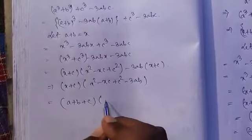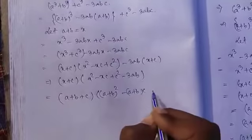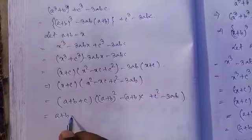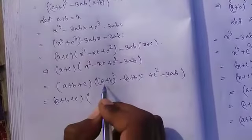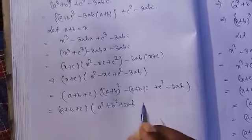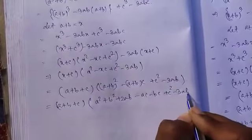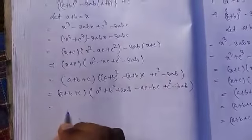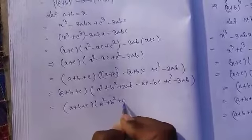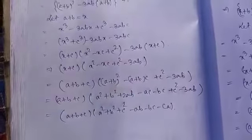Now we substitute (a + b) back in place of x: (a + b + c)[(a + b)² - (a + b)c + c² - 3ab]. Expanding (a + b)² = a² + 2ab + b², and simplifying gives (a + b + c)(a² + b² + c² - ab - bc - ca). Thus the identity is proved.